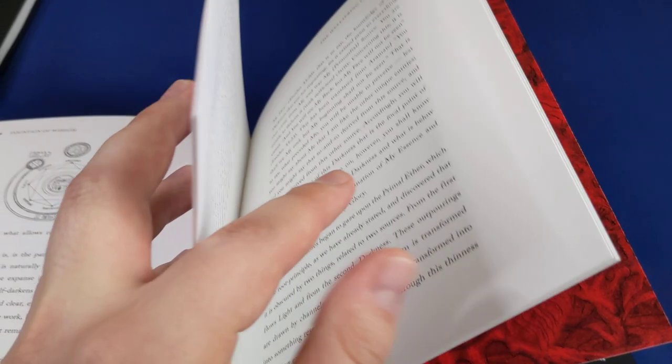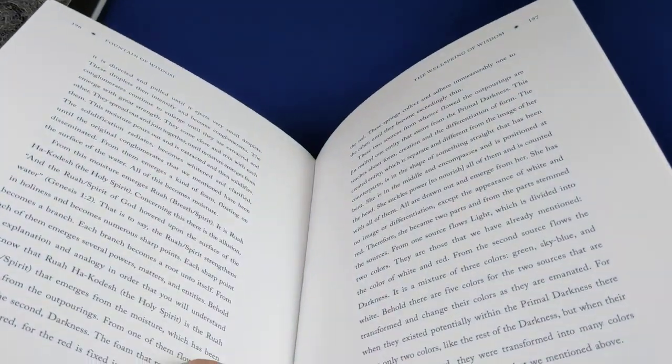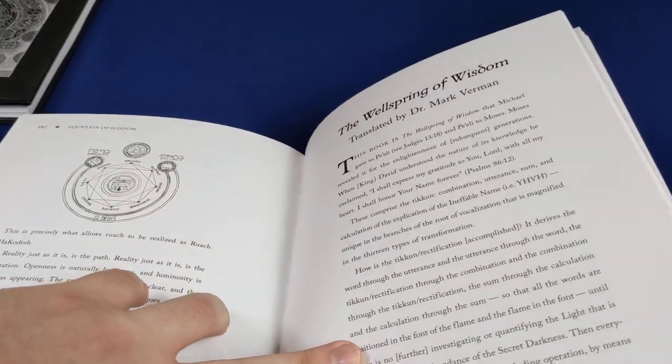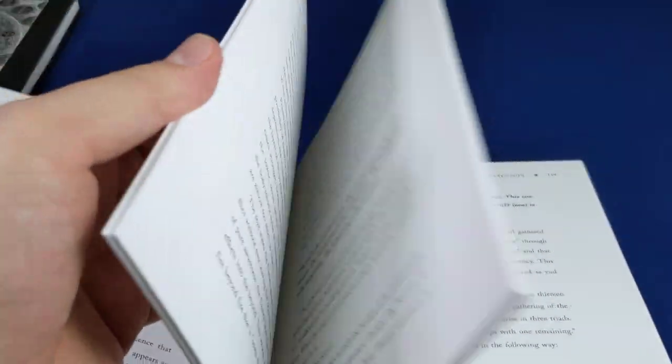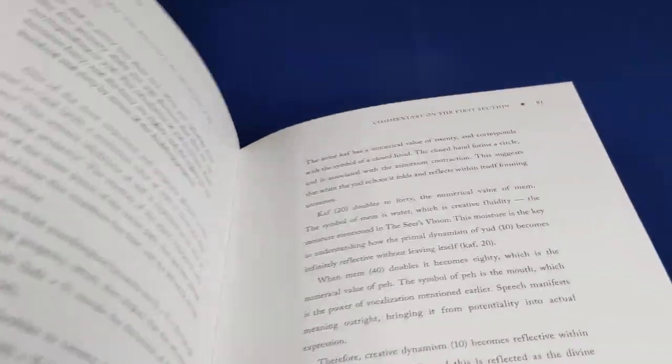This passage is the passage which he calls the seer's vision. And he says that that's really the passage that holds the keys to the rest of the work. So that's what he starts off by giving us a commentary on.